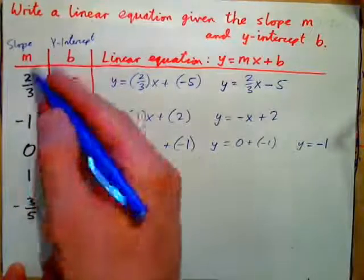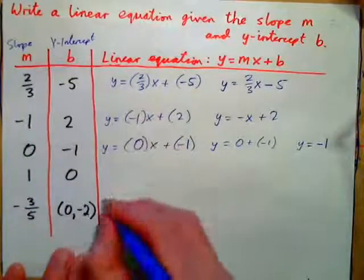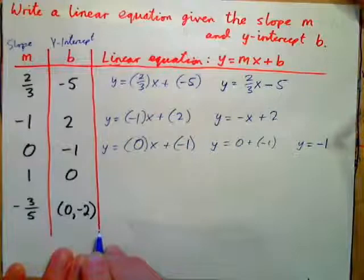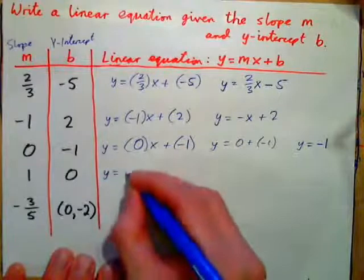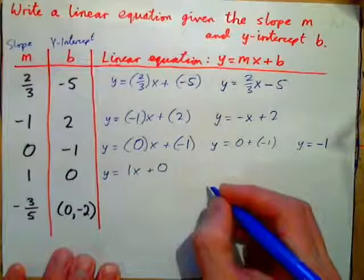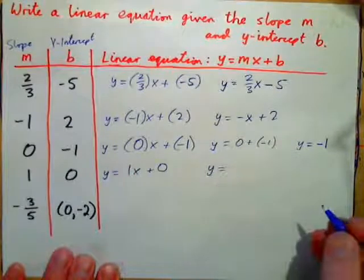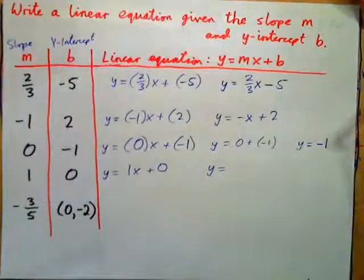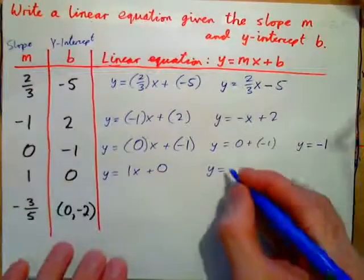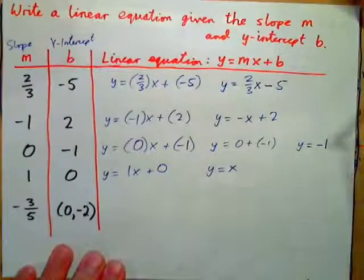Now do this one. The slope is 1, the y-intercept is 0. So that would be y equals 1x plus 0. Or just y equals, simplify that. 1 times x gives x, plus 0 gives x.